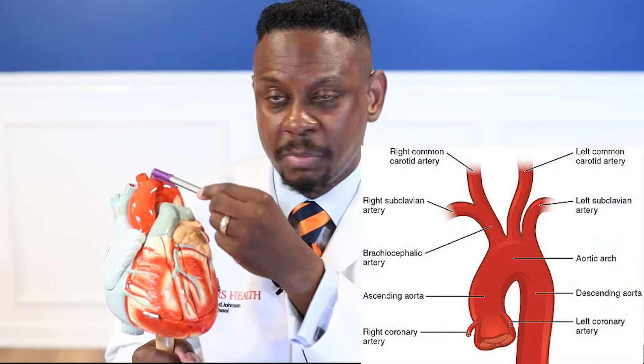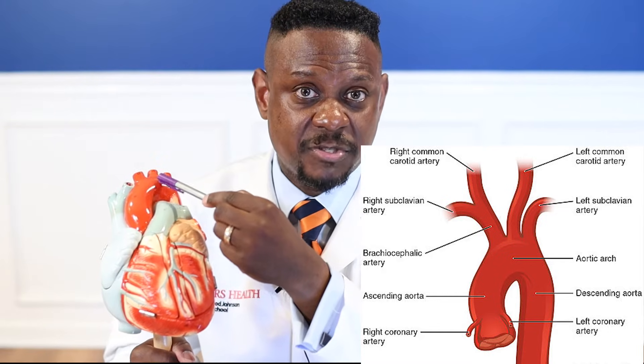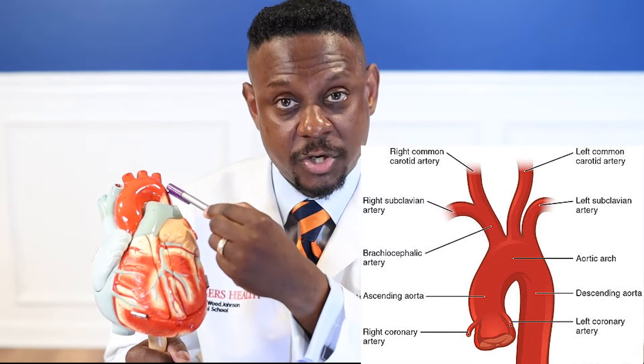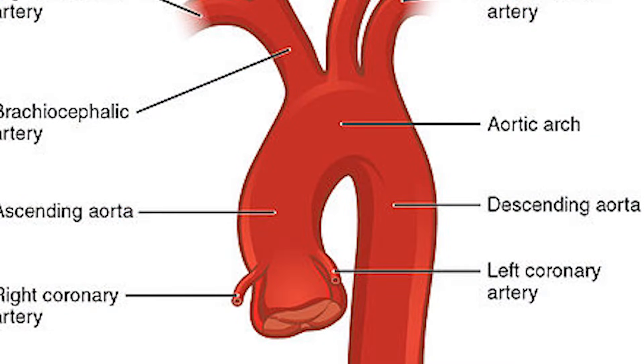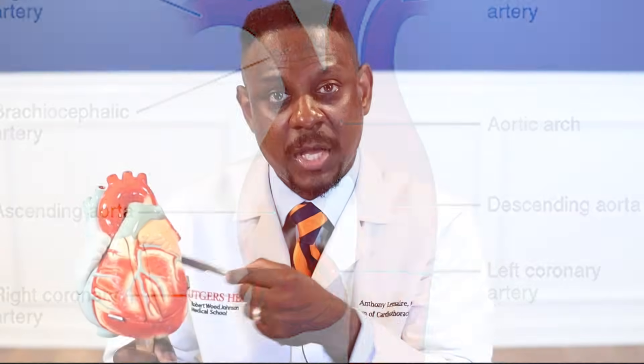Now we're going to focus on the aorta that's just in the chest. The aorta in the chest is subdivided into the ascending aorta until the great vessels in the arch, and this is referred to as the arch of the aorta. And below the left subclavian artery is the descending aorta. So once again: ascending, arch of the aorta, and descending aorta. For the purposes of our discussion, we're going to focus on the ascending aorta.